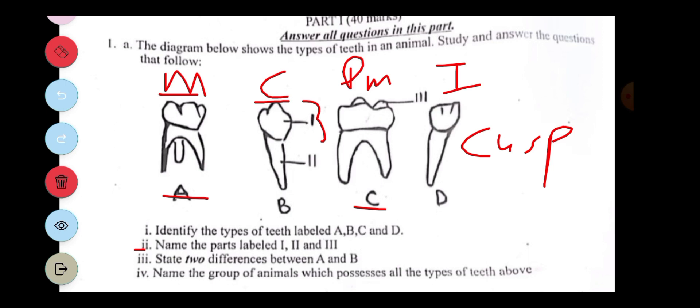The fourth one is name the group of animals which possess all the types of teeth above. Now with the molar, the molar can be found in omnivores. The B can be found in carnivores. Then C can be found in omnivores as well, and D can be found in omnivores. Thank you for watching this video. Click on the image by my channel name to see more videos that I made.